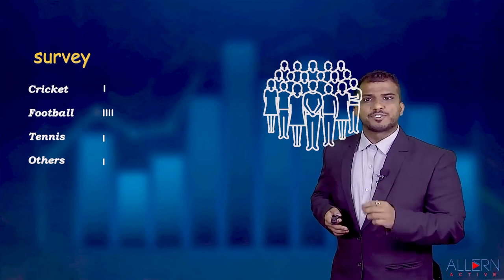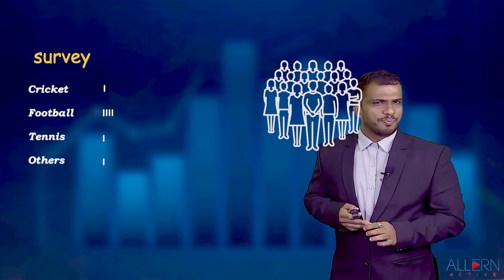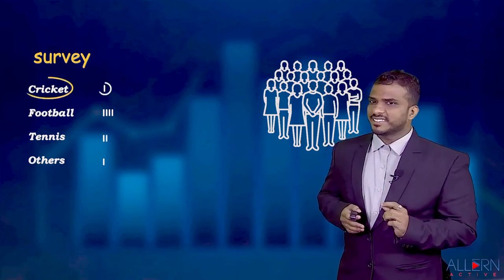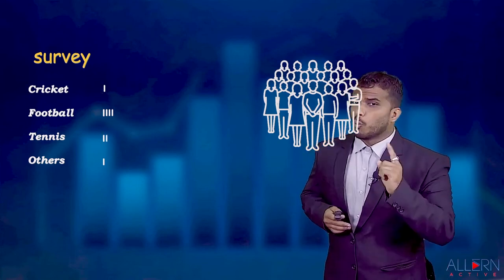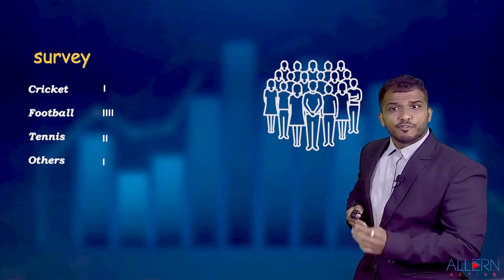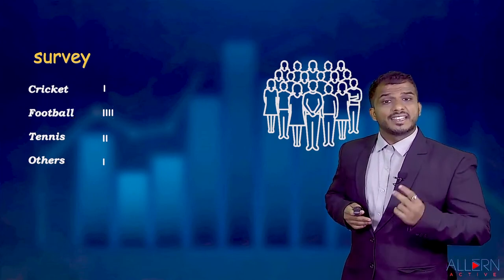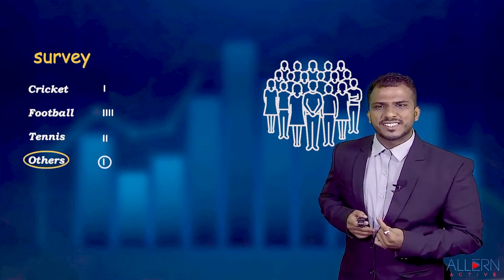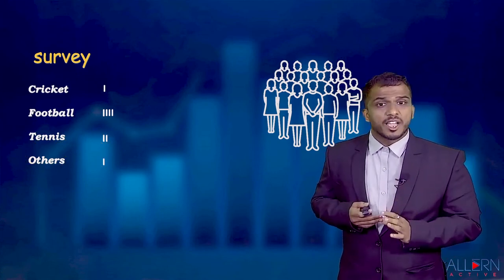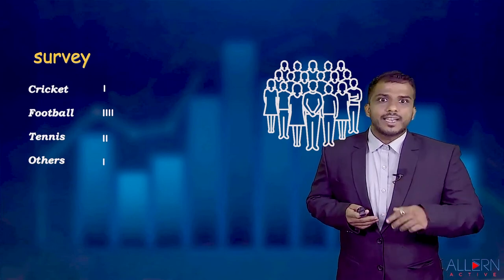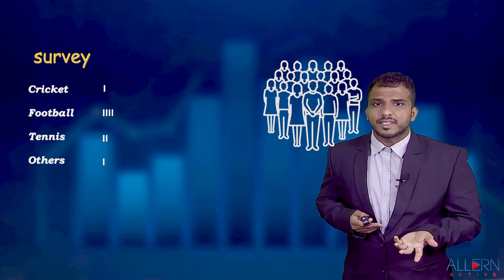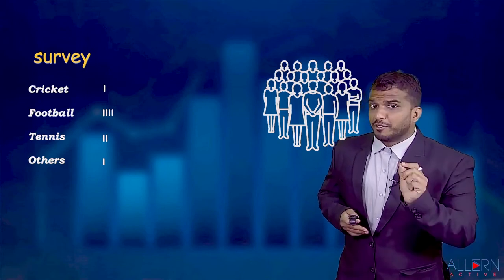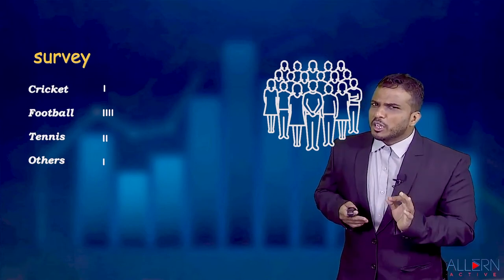At this point we can see: cricket has one person, football has four persons, tennis has two persons, and others has one person. This is very easy to read. But what happens when the next person also says football, giving us a fifth person?